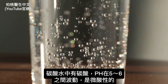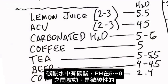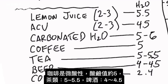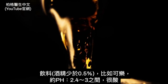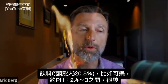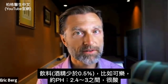Carbonated waters contain carbonic acid and can fluctuate between 5 to 5.5 to maybe even 6, so carbonated water is slightly acidic. Coffee is acidic at pH 5, and tea is roughly the same, maybe a little less acidic at 5 to 5.5. Beer is acidic at 4 to 4.5. Soft drinks like Coke are roughly between 2.4 to 3 — so that's very, very acidic.